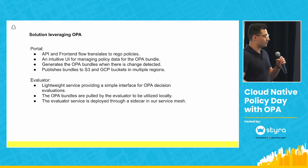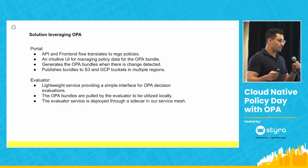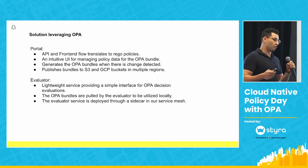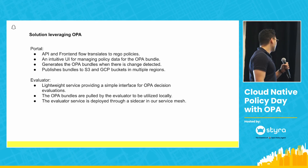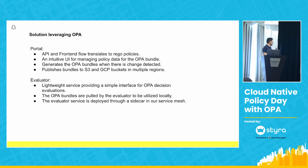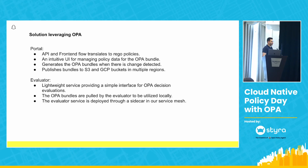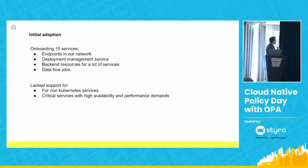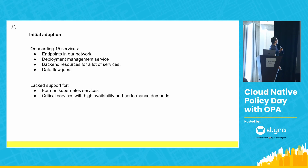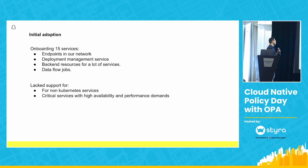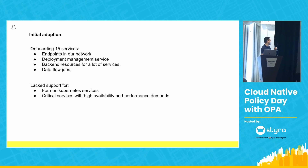The second component is the evaluator — a lightweight service providing a simple interface for OPA decision evaluations. The evaluator pulls in OPA bundles to be utilized locally, and we usually have it deployed as a sidecar in our service mesh or any Kubernetes solution. With this solution, we were able to get initial adoption of 15 services, some of them being really important — services managing endpoints in our network, services managing deployments, data flow jobs, and back-end resources for a lot of services.